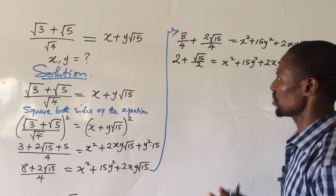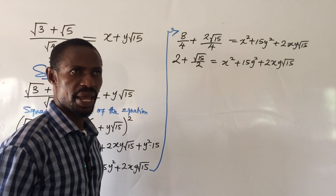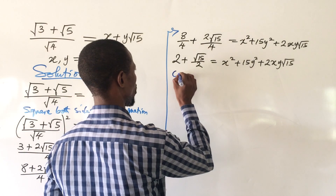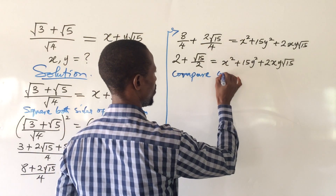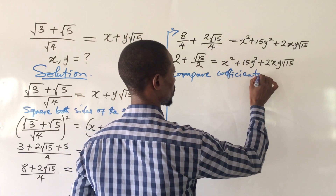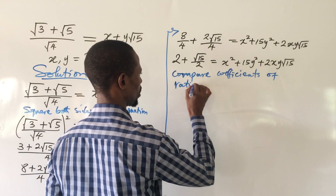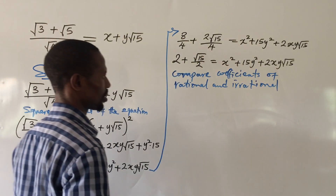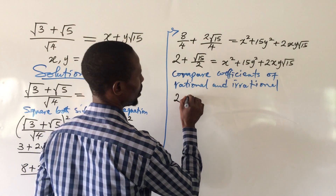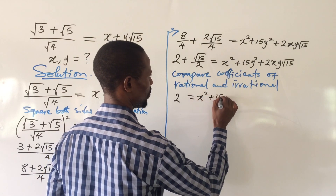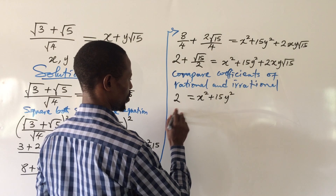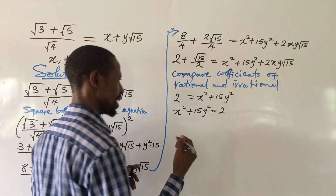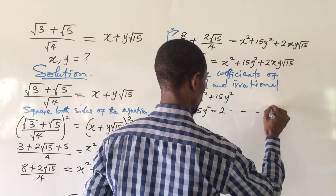From this expression we now compare the coefficients of the rational and irrational parts on both sides. Comparing the rational parts gives us: x² + 15y² = 2. We'll call this equation 2.